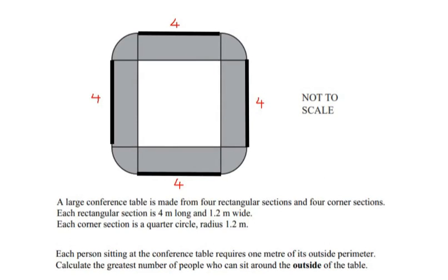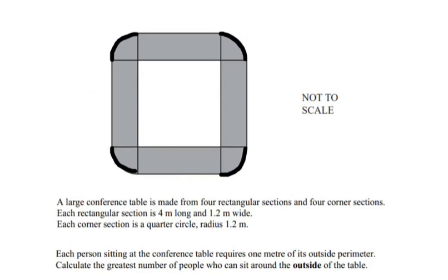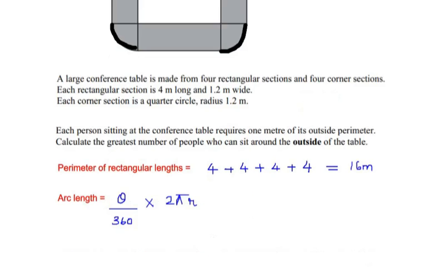Now let us consider the outline of the corner sections. All corner sections are the same since each has a radius of 1.2 meters. The perimeter of each corner is an arc length. Each corner acts as a sector with a central angle of 90 degrees, being one-quarter of a circle.